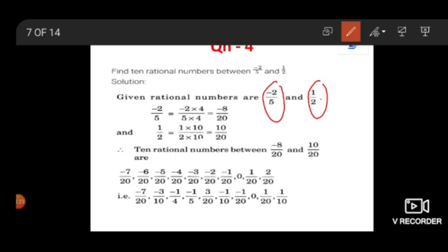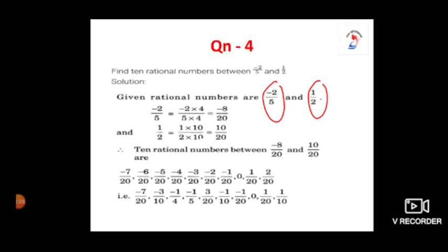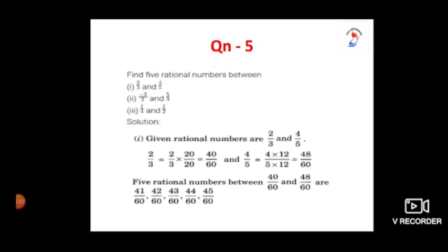In this way, I have converted the denominator as 20. You can also try it for any other numbers. We will move on to the next problem. It is question number 5 — the question is: find 5 rational numbers between 2 by 3 and 4 by 5.